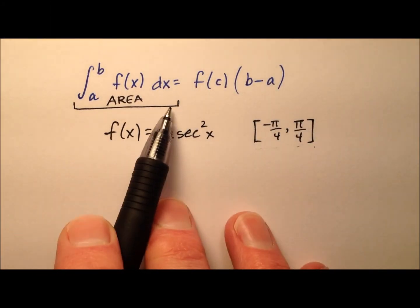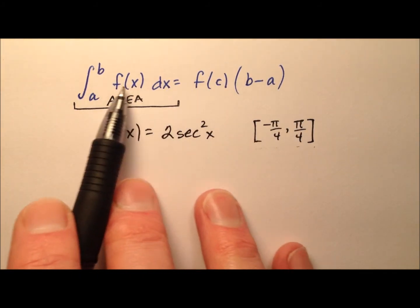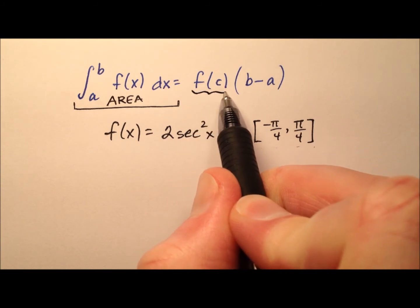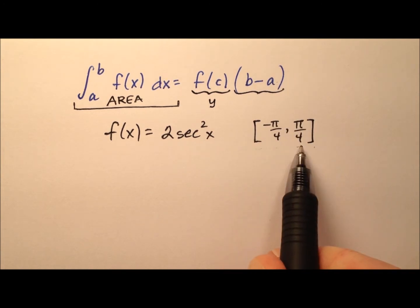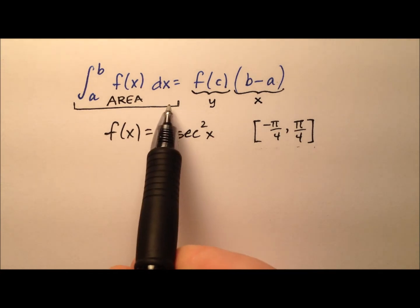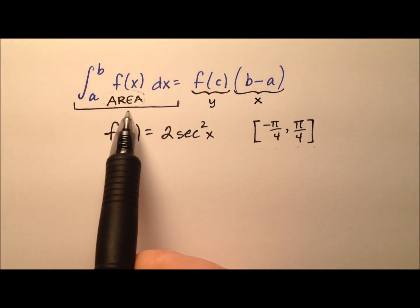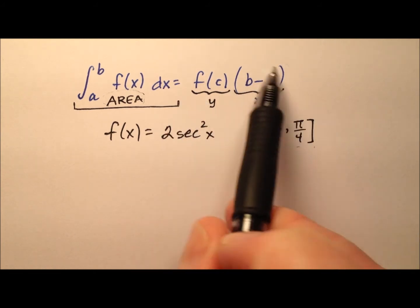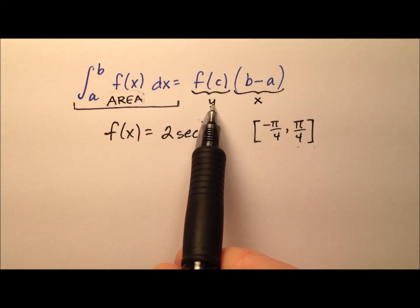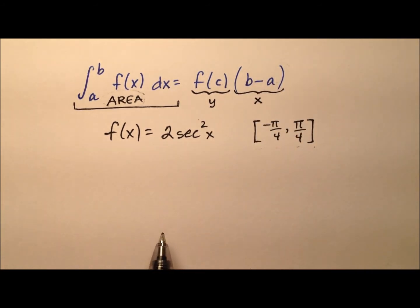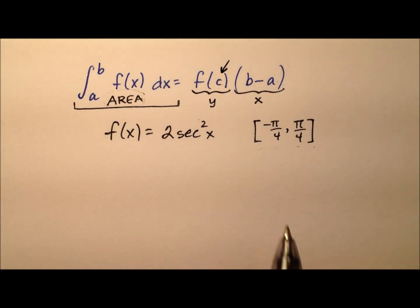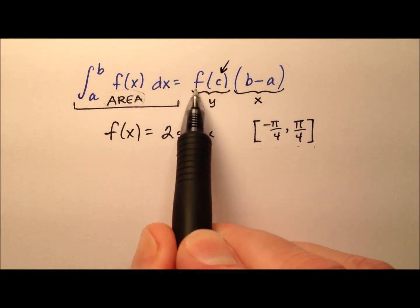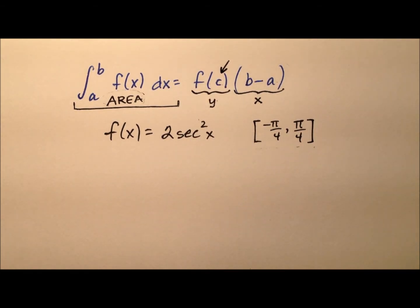So that's what that area looks like. With the mean value theorem for integrals, this area is the same as f of c — which is a y value — multiplied by b minus a, which is the width of this interval. So we can take that area with the curved top and smoosh it down into a rectangle whose height is this f of c value and whose width is the width of this interval. The mean value theorem guarantees some value of c in this interval that when plugged into the function gives this height. Also, this f of c is the average value of the function.